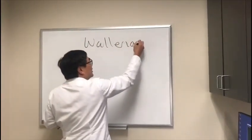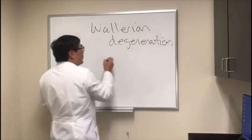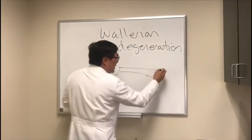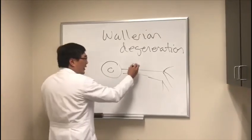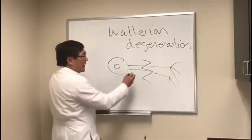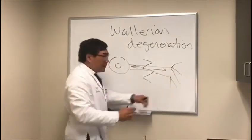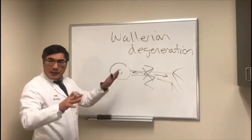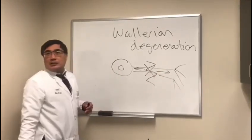I want to talk about degeneration — in this case, Wallerian degeneration. The axon is connected to the cell body and then to a synapse connecting to another cell body. Whenever you have a disruption in the axon, you'll have disruption of intraaxoplasmic flow, which will kill the cell body unless it can recover. Damage to the axon from trauma, demyelination, ischemia, or a tumor causes dying back in both directions.